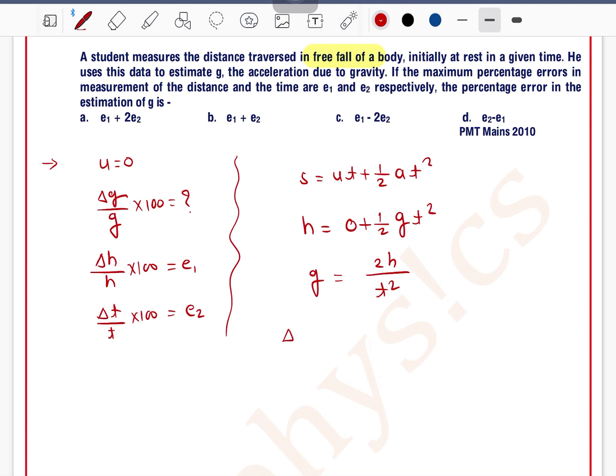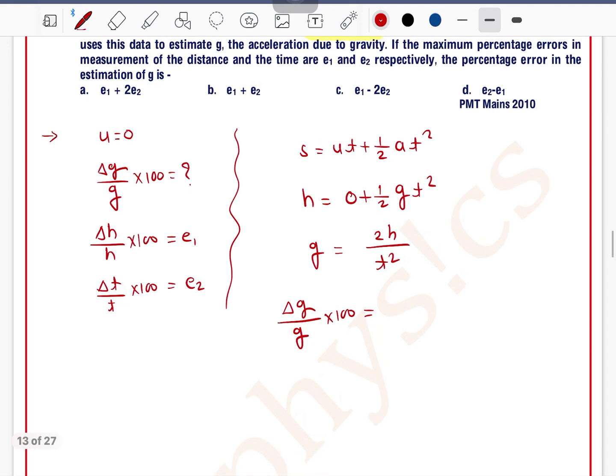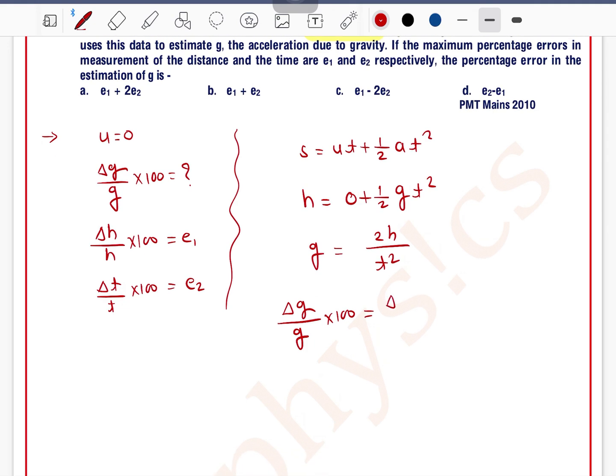From this we can use the formula of error for division. Delta g by g times 100, that is percentage error in g, is equal to percentage error in h plus 2 times the percentage error in time. Delta h by h times 100 is e1, delta t by t times 100 is e2, so e1 plus 2e2.